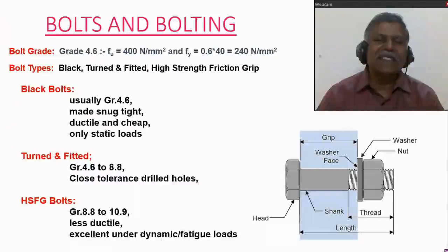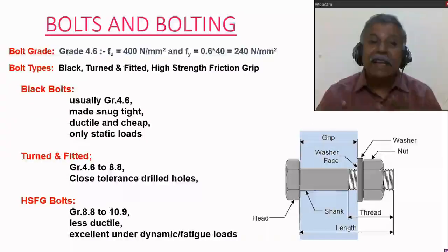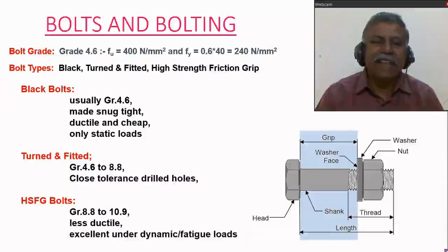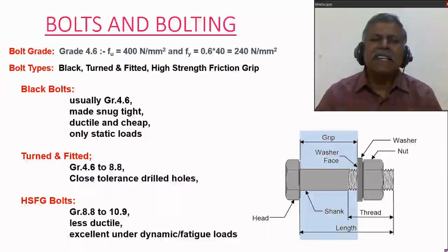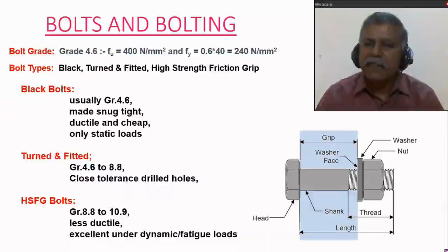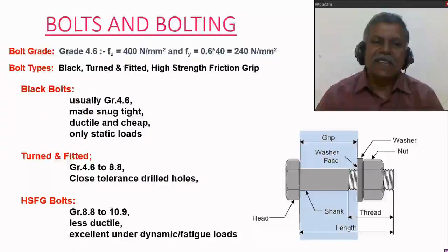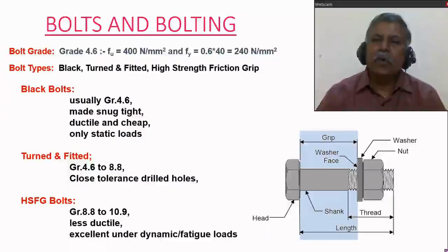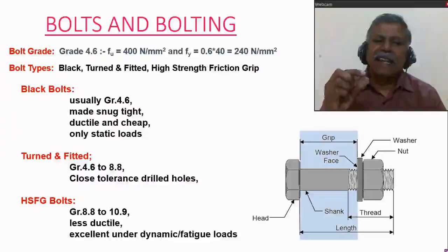The second type is turned or fitted bolts. These are available in grades from 4.6 to 8.8 and have close tolerance with the drilled holes. Generally, turned or fitted bolts are used in the automobile industry — for example, in bikes and scooters, the bolts usually have a precise fit.